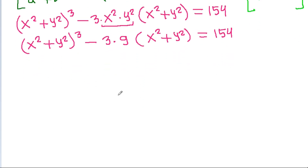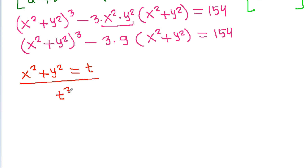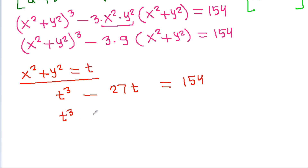Now, suppose x square plus y square is equal to t. Then it is t cubed minus 3 times 9, which is 27, times t equals 154. So t cubed minus 27t minus 154 equals 0.